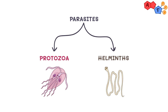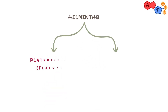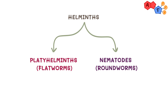Just to revisit the concept again, parasites can be categorized into two main groups: protozoa and helminths. Previously we talked about protozoa, and today we'll be talking about helminths. Generally speaking, we can divide helminths into two big groups: platyhelminths, which are also known as flatworms, and nematodes, which are known as roundworms.